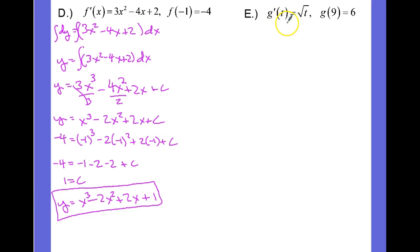Here we have g prime of t is equal to the square root of t, and so I'm going to rewrite that as dy dt is equal to t to the 1 half power, and that will give us dy equals t to the 1 half times dt.